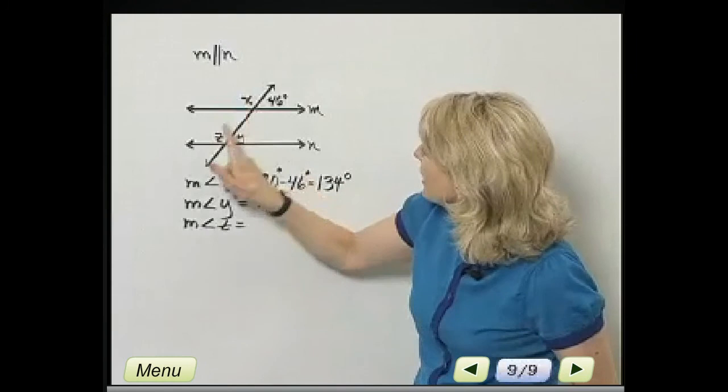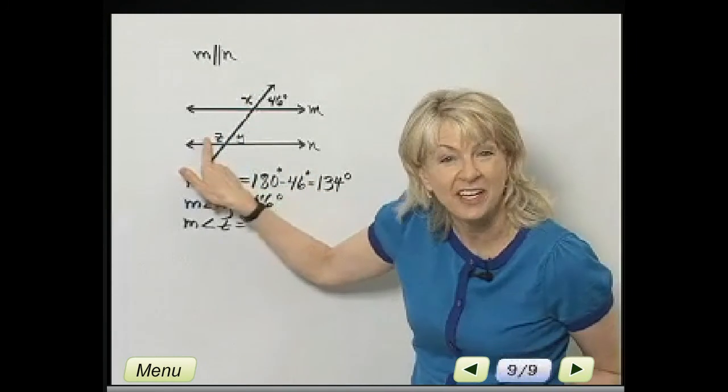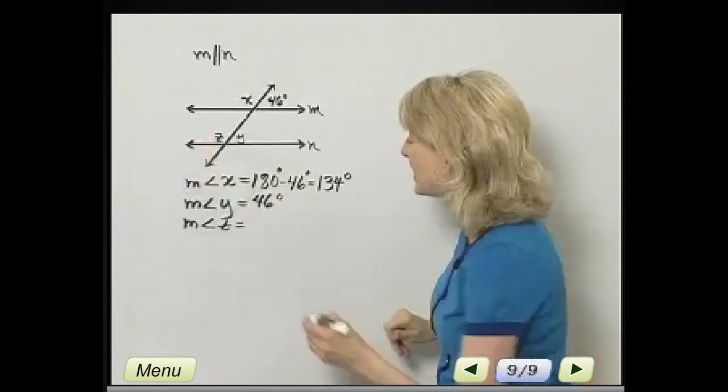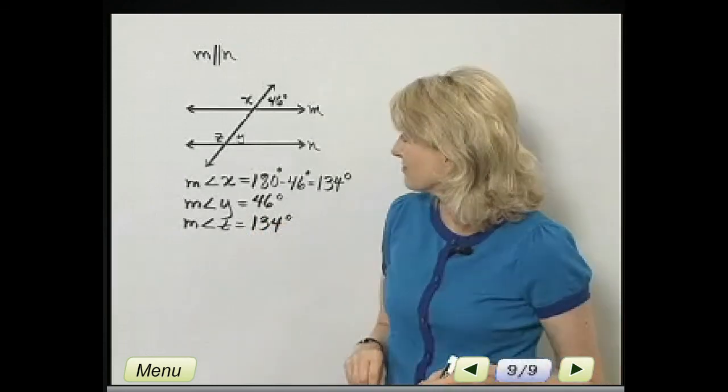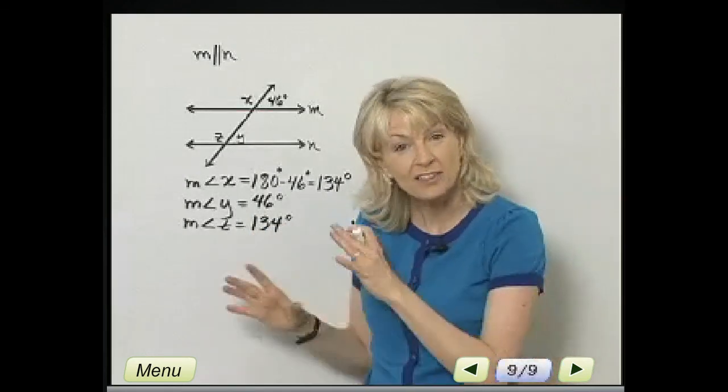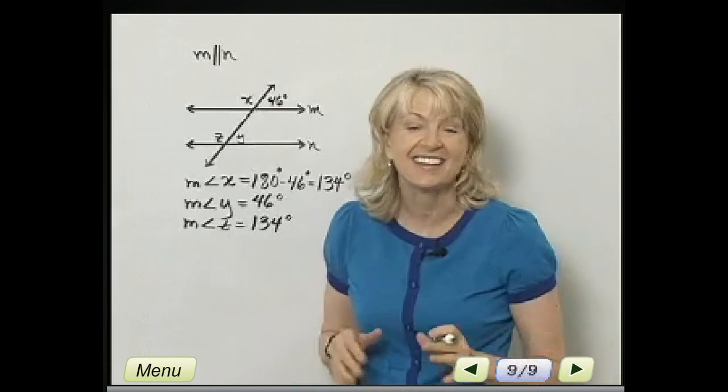And then if I know the measure of angle X, it's the same as the measure of angle Z, because they are corresponding angles. So that is 134 degrees also. All right, at this time, practice working with lines and angles.